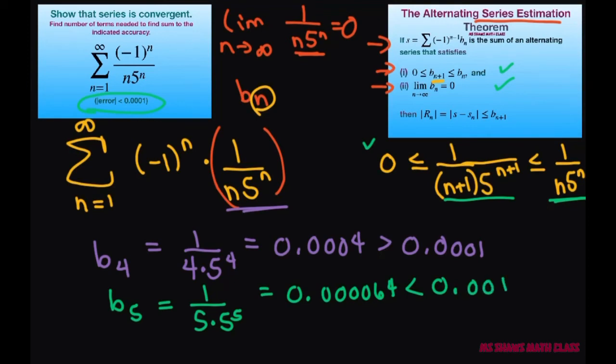Therefore, by the alternating series estimation theorem, our n, the number of terms we need to find the accuracy, is n equals 4. That's because the 5th term is less than the desired area. And we need to add 4 terms to get to the sum to the desired accuracy.